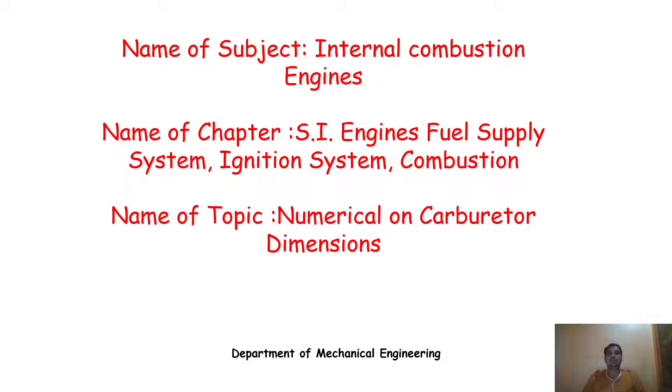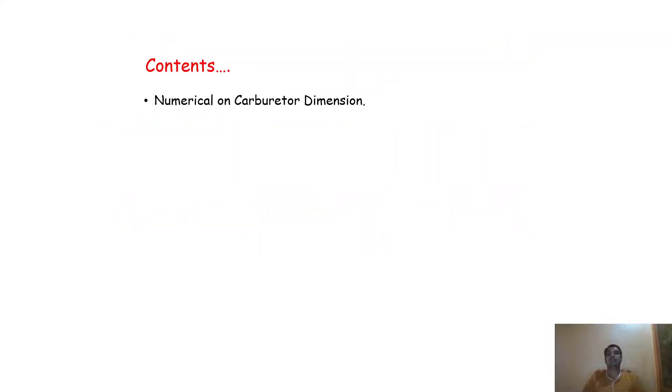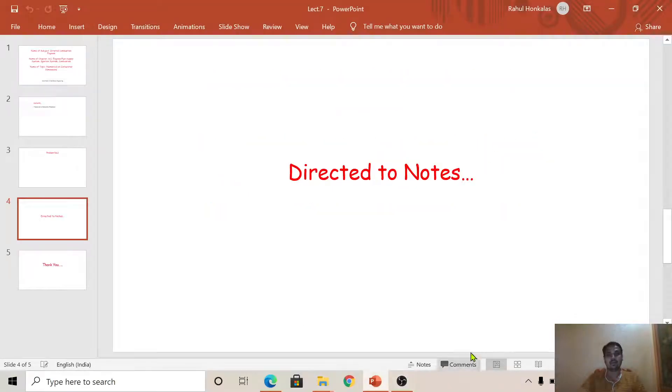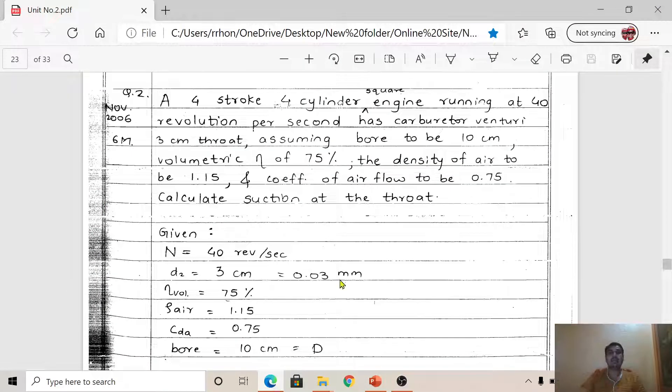Subject: Internal Combustion Engines. Chapter: SI Engines Fuel Supply System, Ignition System, Combustion. Topic: Numericals on carburetor dimensions. In the last lecture we already discussed the first numerical on carburetor dimensions. Now in this video we are going to discuss another variety of problem — Problem Number 2 on the dimensions of the carburetor itself.